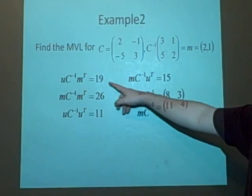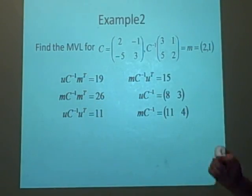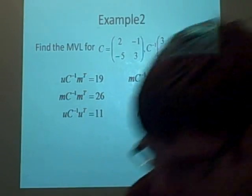And these will give you the values here: 19, 26, 11, 15. And then all we do is put that into our formula. It's not that difficult.